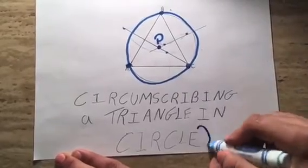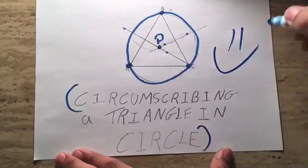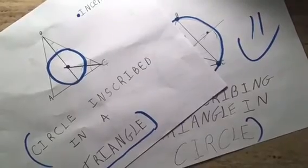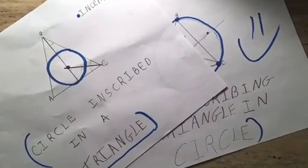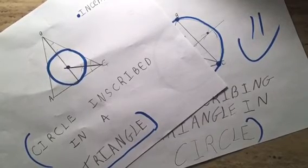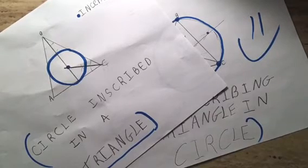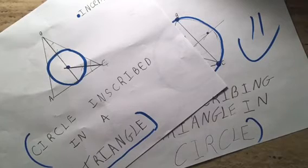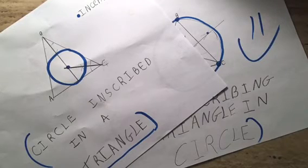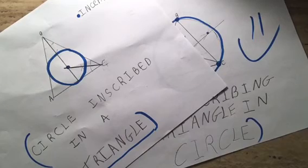And that's how you circumscribe a triangle in a circle, as you guys can see. Guys, this is the end of the video — I hope you enjoyed and learned something from this. Now you guys know how to inscribe a circle in a triangle and how to circumscribe a triangle in a circle. Stay tuned for more videos, don't forget to give the video a rating, subscribe, and as always, keep on clashing — at least now you know how to pass your geometry class. Thank you guys!